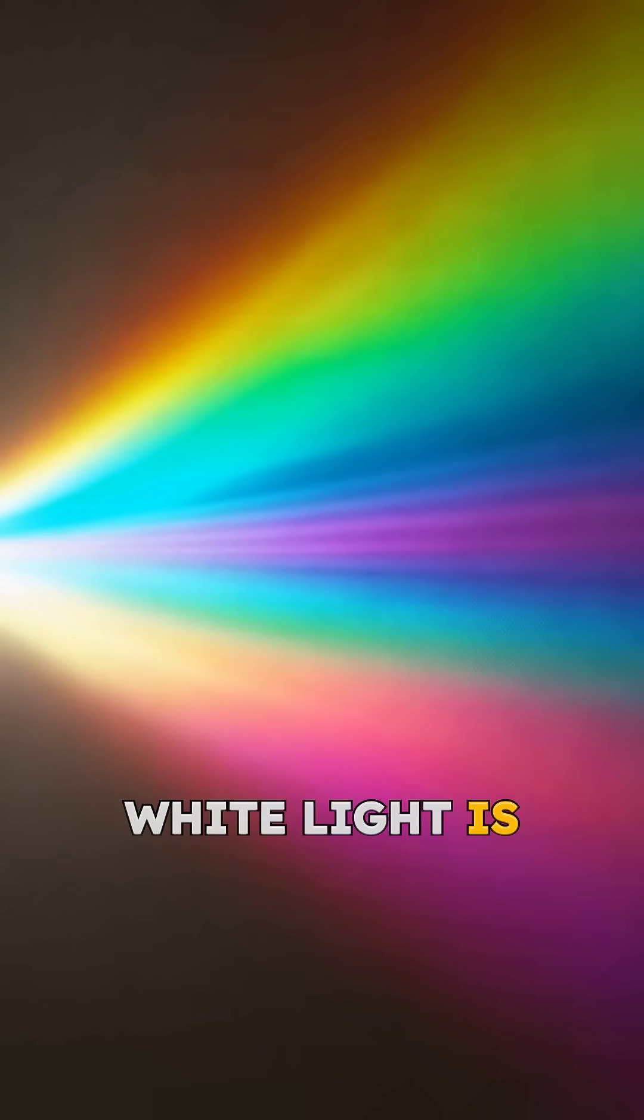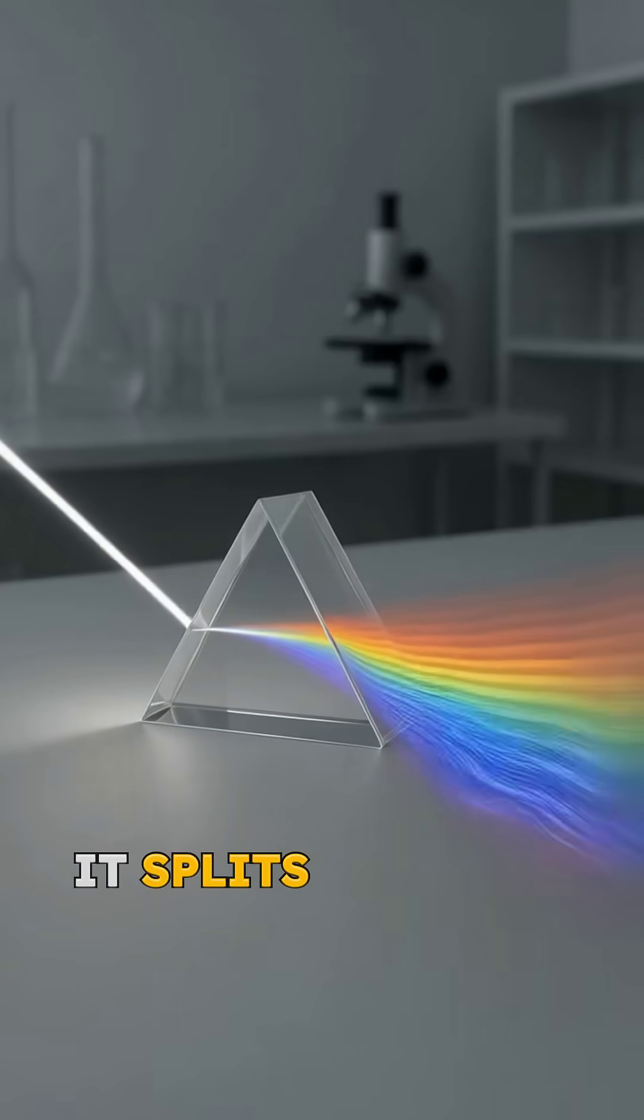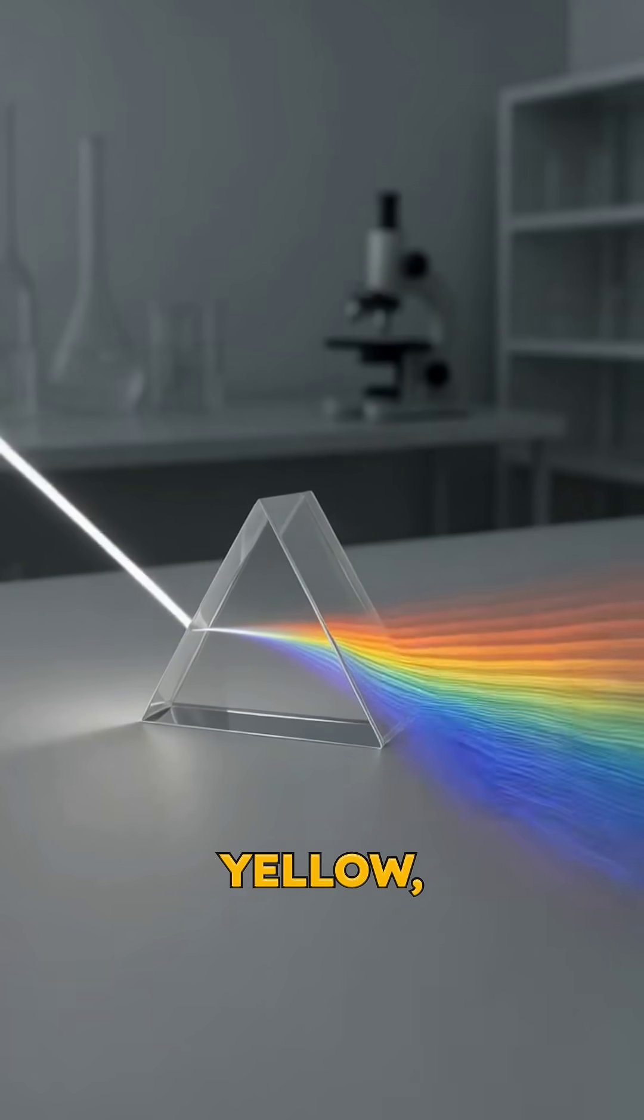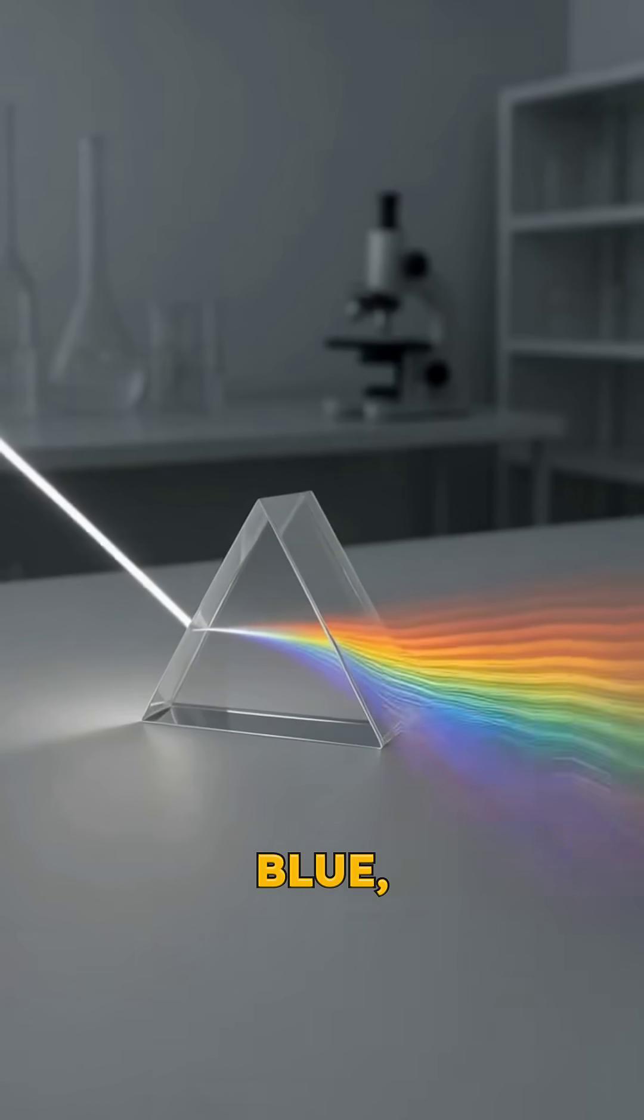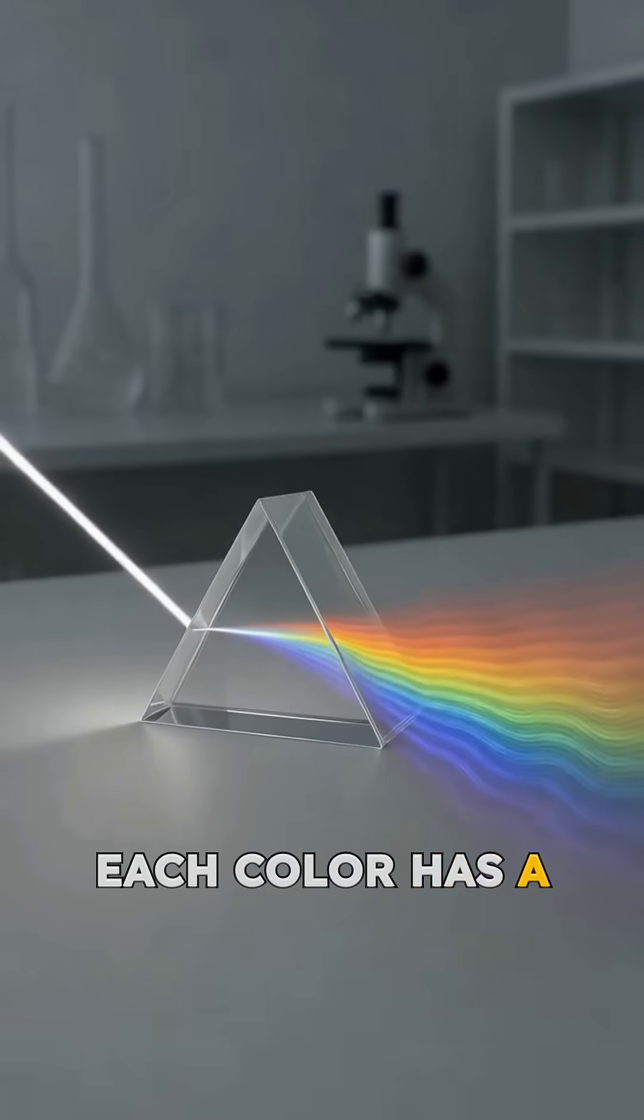What we call white light is actually every color mashed together. When it hits a prism, it splits into red, orange, yellow, green, blue, indigo, and violet, because each color has a different wavelength.